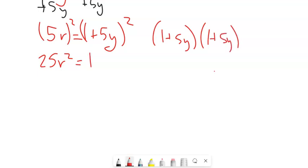And you multiply that out. You get 1. You get 2 of those 5ys, so plus 10y. And you get 5y times 5y, which is 25y squared.